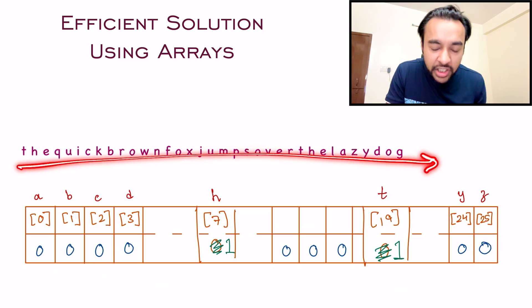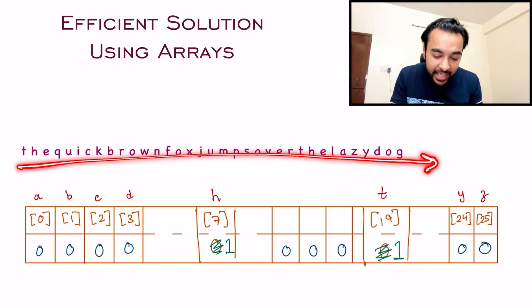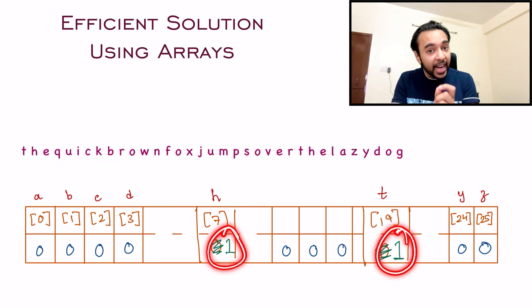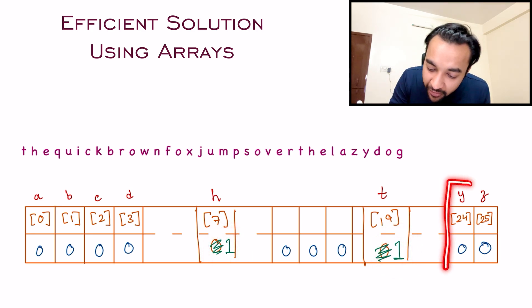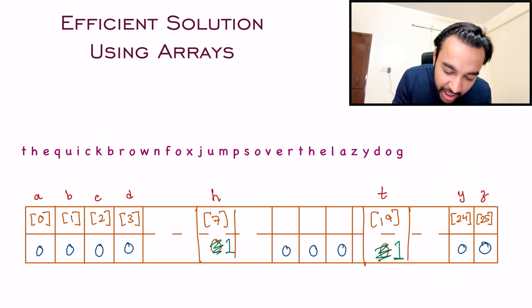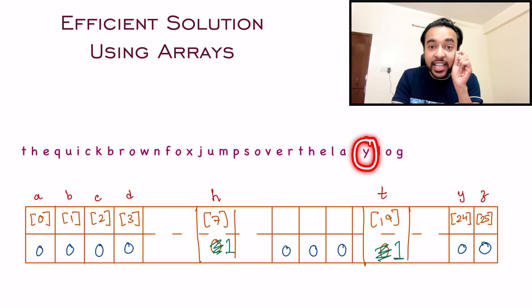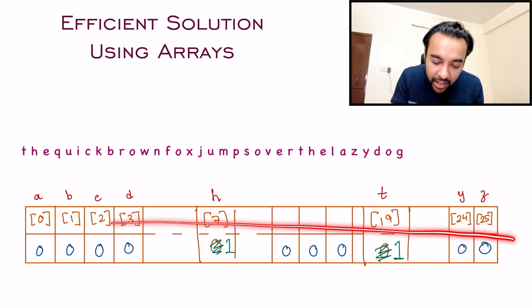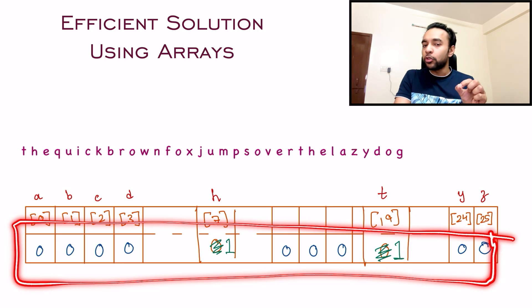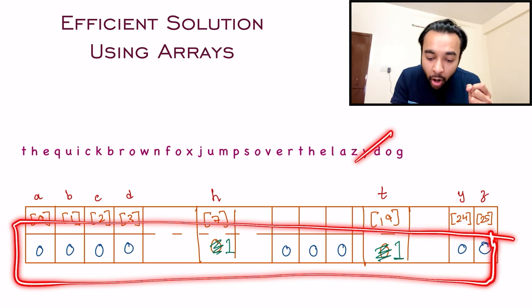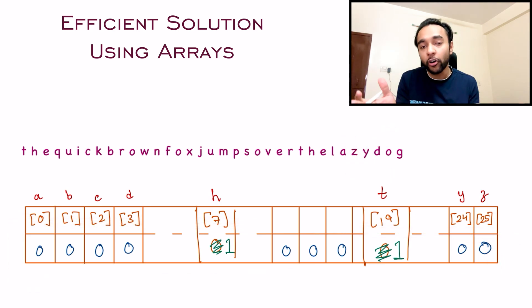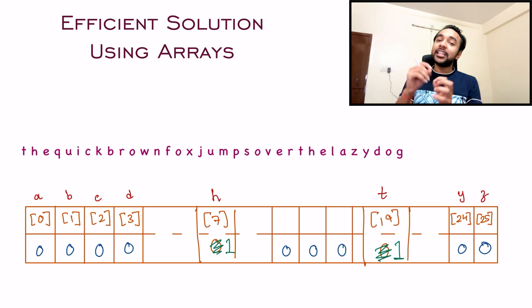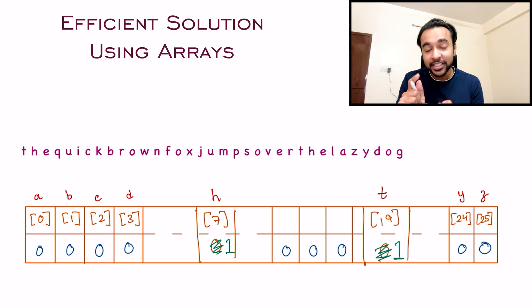Once you have iterated through the entire string, if a character was present, its value will have changed to 1. And if a character was missing, then you can never reach that index. Think about it — if this string did not have the character Y, then there is no way that value would have changed to 1. Once you have completed the iteration of your entire string, just look at your array once again. If you find any value to be 0, that means there was at least one character which did not occur in the string, and hence you can return false. If you found all the values to be 1, that means you have encountered every character at least once, and hence this string will be a pangram.